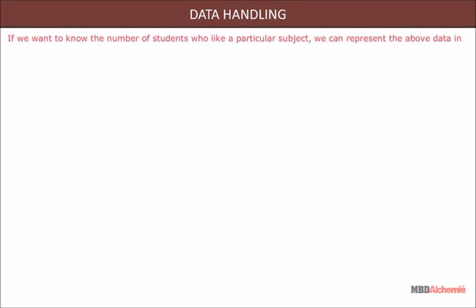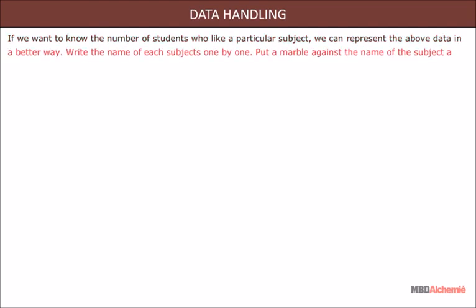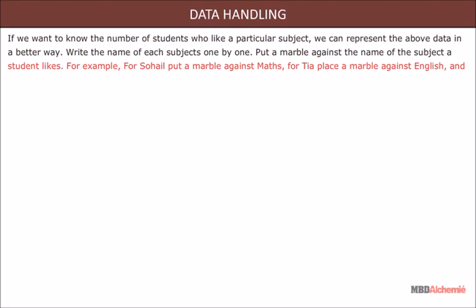If we want to know the number of students who like a particular subject, we can represent the above data in a better way. Write the name of each subject one by one. Put a marble against the name of the subject a student likes. For example, for Sohail put a marble against maths, for Tia place a marble against English, and so on.